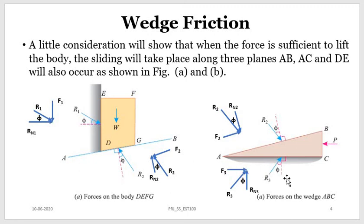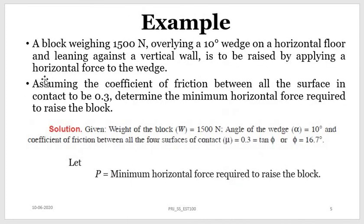Applying the conditions of equilibrium on these two free body diagrams, we can solve for the value of P required to lift the block upward. Now let us see one example. A block weighing 1500 Newton overlying a 10-degree wedge on a horizontal floor and leaning against a vertical wall will be raised by applying a horizontal force to the wedge. Assuming the coefficient of friction between all contact surfaces to be 0.3, determine the minimum horizontal force required to raise the block.